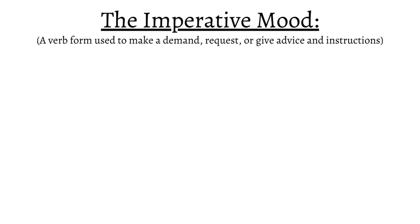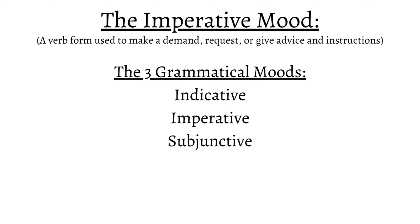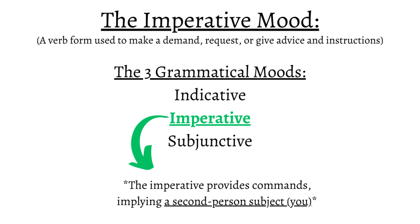The imperative mood in English is a verb form used to make a demand, a request, or give advice and instructions. Being one of the three grammatical moods, the imperative mood is also known as providing commands because they imply a second-person subject 'you,' but they do not include 'you' or any other subject.